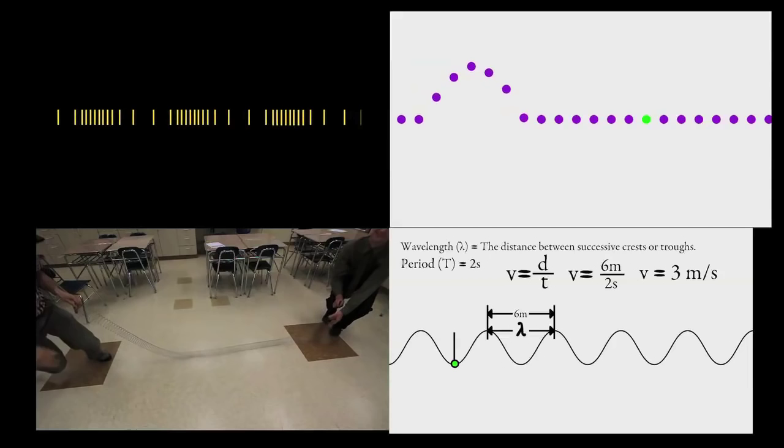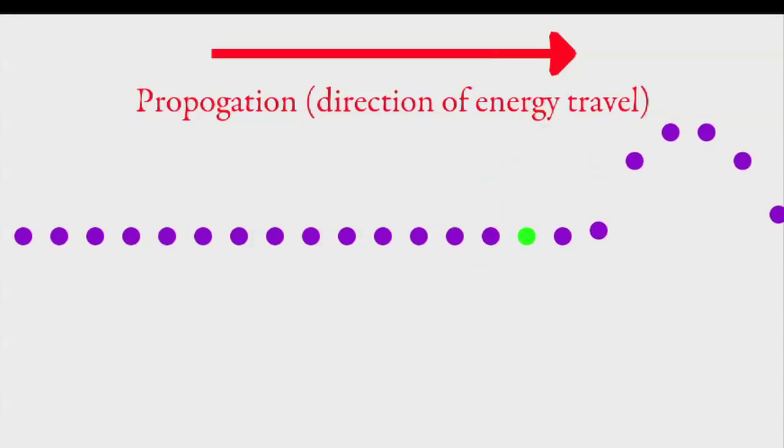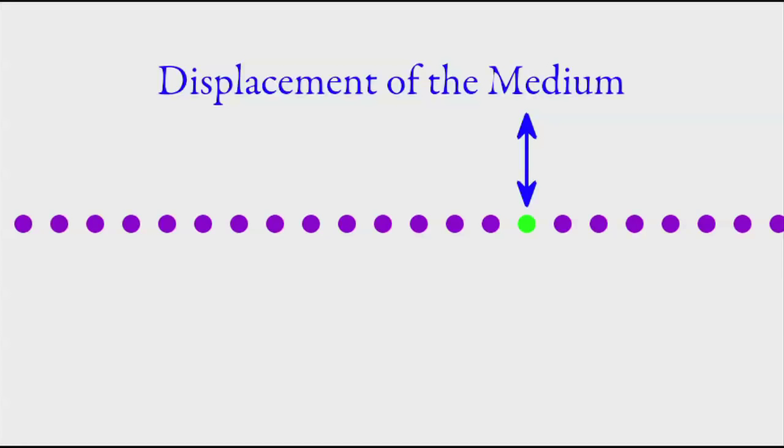Here's a transverse wave. Since it's a single disturbance, we can also call it a pulse. Propagation is the direction of energy travel in a wave. The medium is the material that the wave is traveling through.